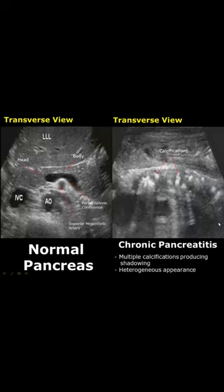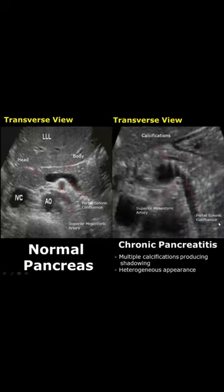Here is another image of chronic pancreatitis showing smaller calcifications and also showing some comet tail artifacts.